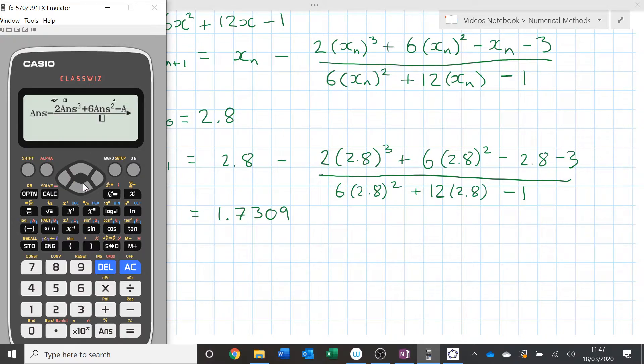This is where if I make a mistake, I'll get someone in the room to call out. 6 answer squared. Plus 12 answer minus 1. Equals. And I got the number that I got before. Great. Okay. So now I should be able to just click answer again to get my next value.